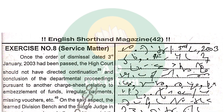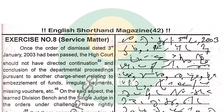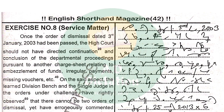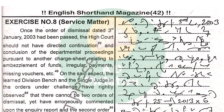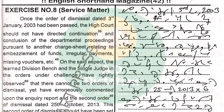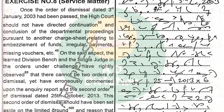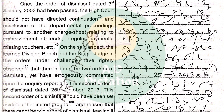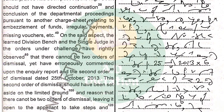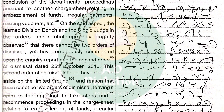Once the order of dismissal dated 3rd January 2003 had been passed, the High Court should not have directed continuation and conclusion of the departmental proceedings pursuant to another chart sheet relating to embezzlement of funds, irregular payments, missing vouchers, etc. On the shared aspect, the Land Division bench and the single judge in the orders under challenge have rightly observed that there cannot be two orders of dismissal, yet have erroneously commented upon the inquiry report and the second order of dismissal dated 25 October 2013.